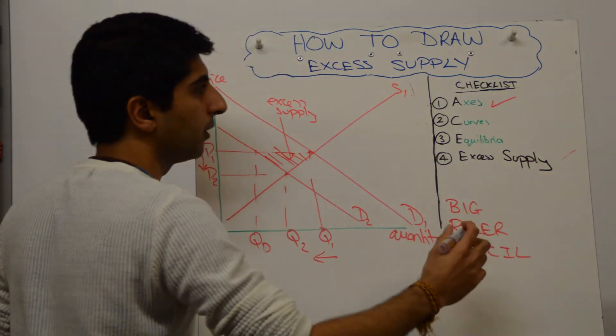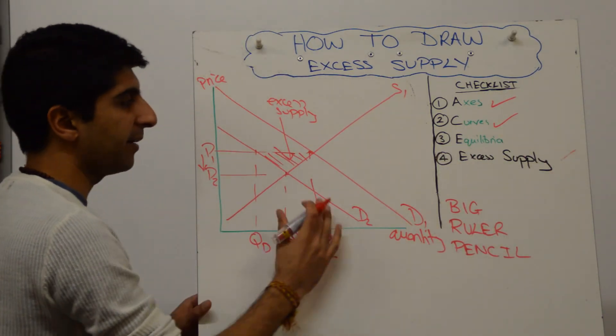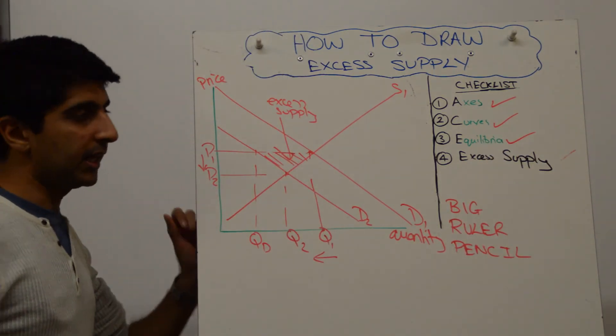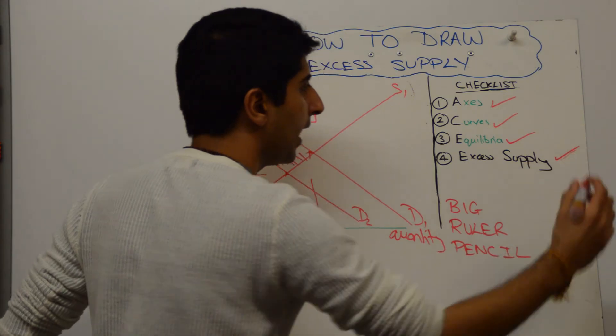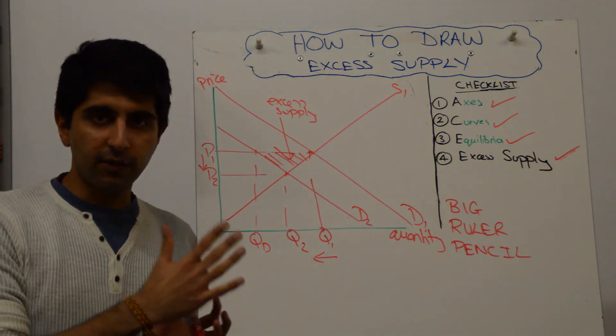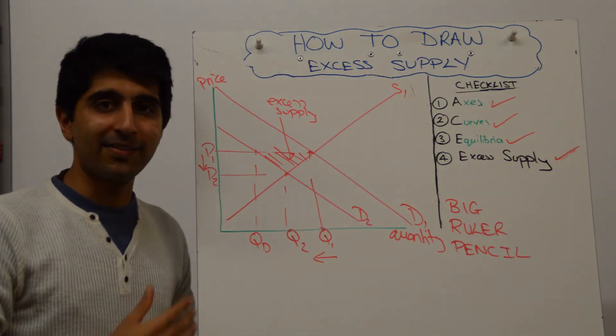Have we labelled our axis? Yep. Have we labelled our curves? Yes, we definitely have, beautifully. Have we labelled equilibrium? Yes, we have. Have we shown and labelled clearly the excess supply? Yes, we have. Excellent. All right, so that's how you do that. Either by shifting supply to the right or shifting demand to the left.